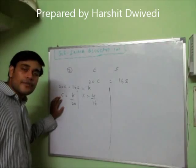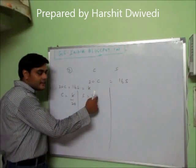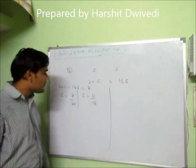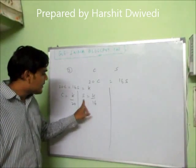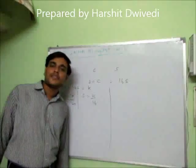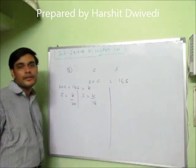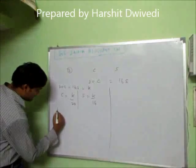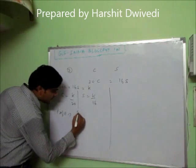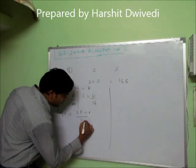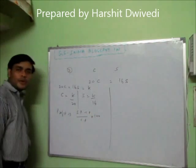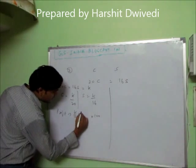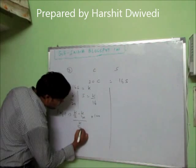So cost price of one article is K by 20 and selling price is K by 16. Is it profit or loss? K is constant in the numerator. In the denominator of cost price we have 20, and in the denominator of selling price we have 16. So obviously K by 16 is bigger, meaning the selling price is higher — so it is profit. The profit formula is: selling price minus cost price upon cost price into 100. Substituting: K by 16 minus K by 20, upon K by 20, into 100.